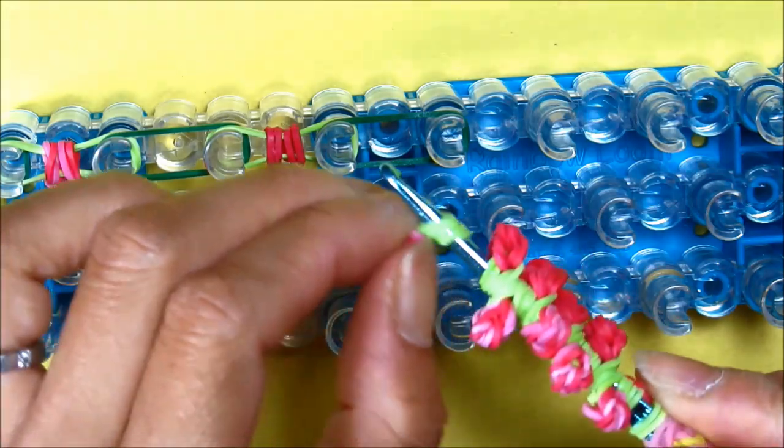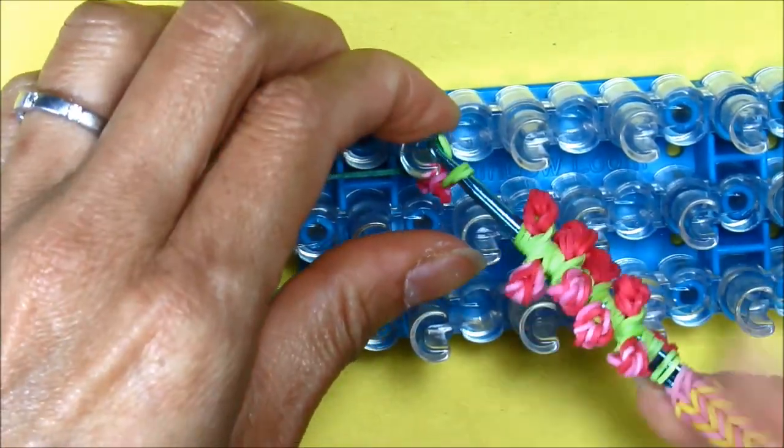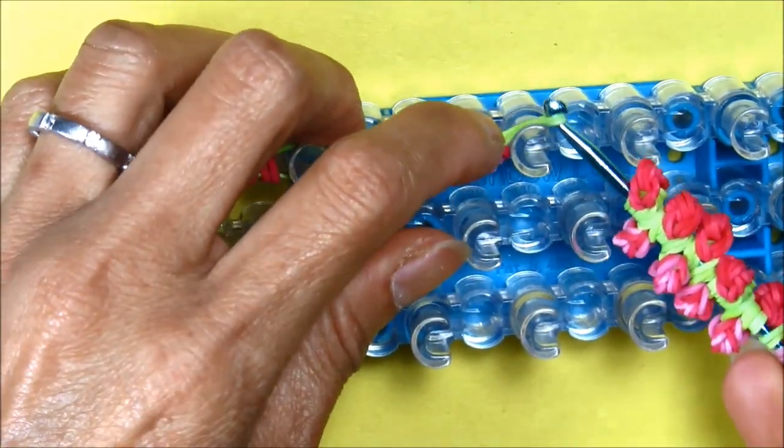One single band and one with the rosebud and the leaf right onto your loom.